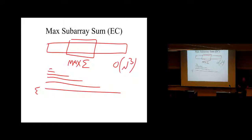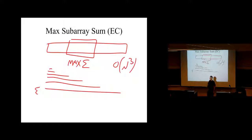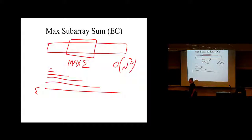So you compute all the partial sums: the first element, the sum of the first two, first three, first four, first five, and so on. If you want to compute the sum going from index 13 to 27, how would you obtain that sum very quickly? Subtract. You just subtract the two partial sums — take the sum of the first 27, subtract the sum of the first 12, and you have the sum of the middle block. One subtraction.